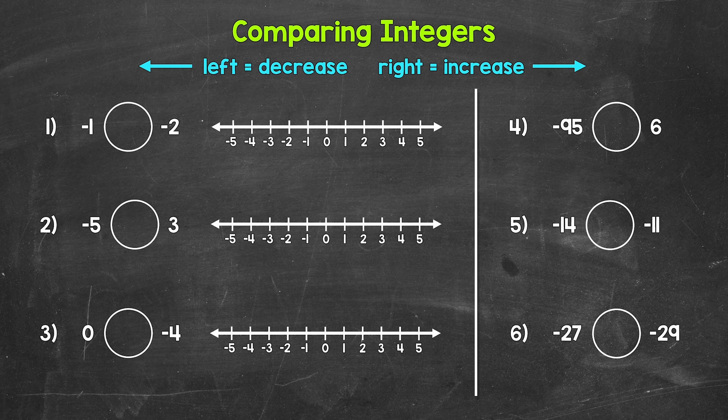When comparing integers, it can be helpful to visualize the integers on a number line. Just remember, the further right on a number line, the greater the value — numbers increase in value as we go right. On the other hand, the further left, the smaller the value — numbers decrease in value as we go left on a number line.